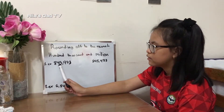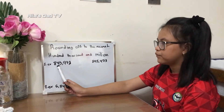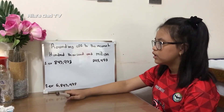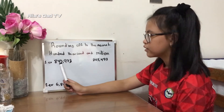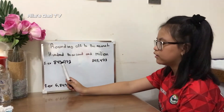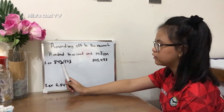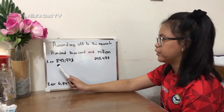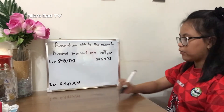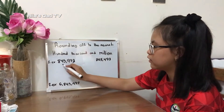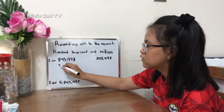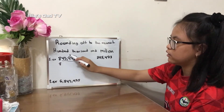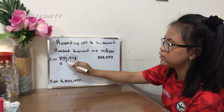To the right of eight is four. The next step is to figure out if this number is greater than or less than five. We know four is less than five, so nothing will happen to the number you're rounding off — you just copy it. The rest of the numbers will change into zero.